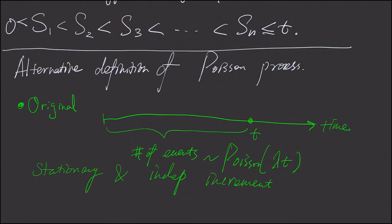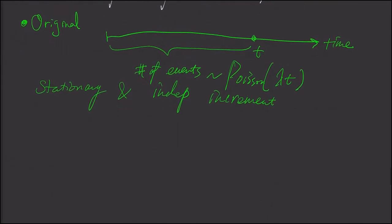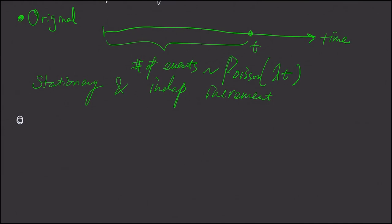This assumption — that the number of events is a Poisson distribution with rate lambda times t — at first glance seems pretty artificial. In the alternative definition, we learn the most natural way to define the Poisson process.